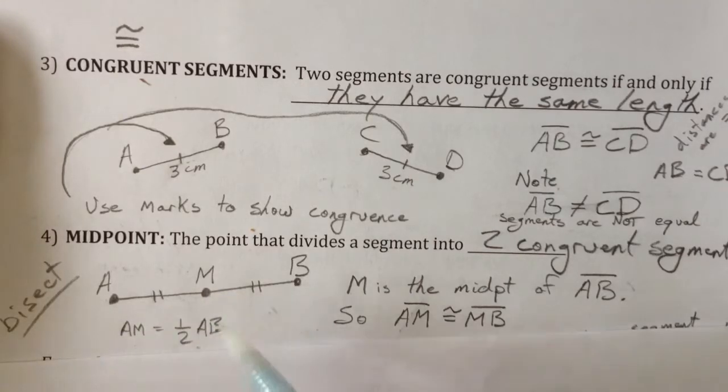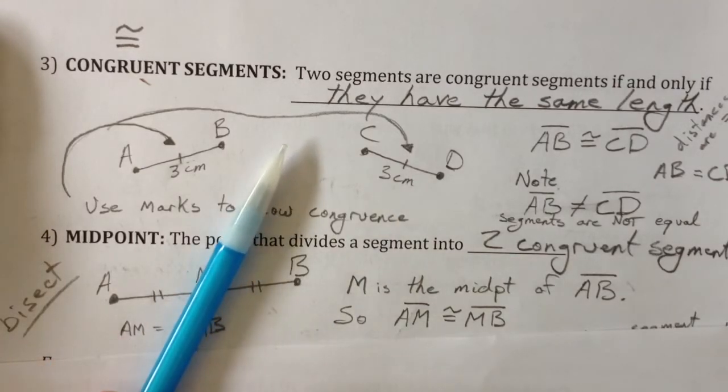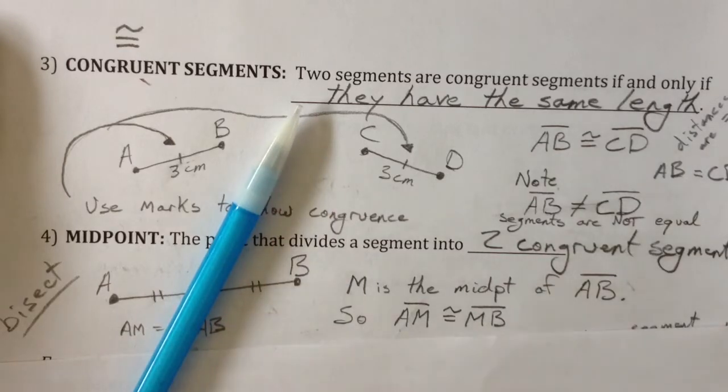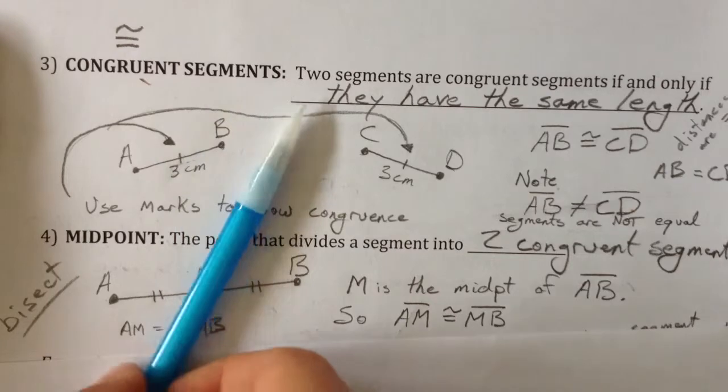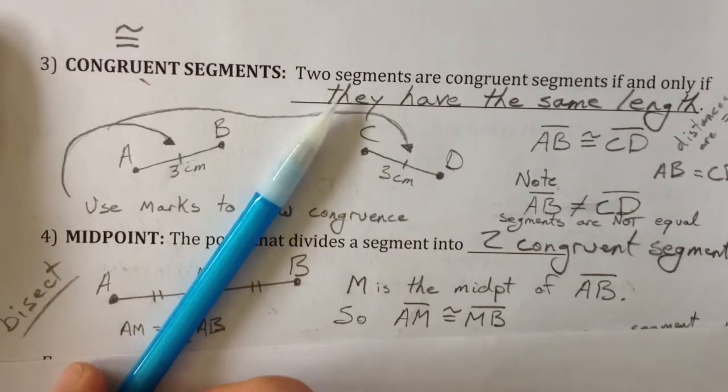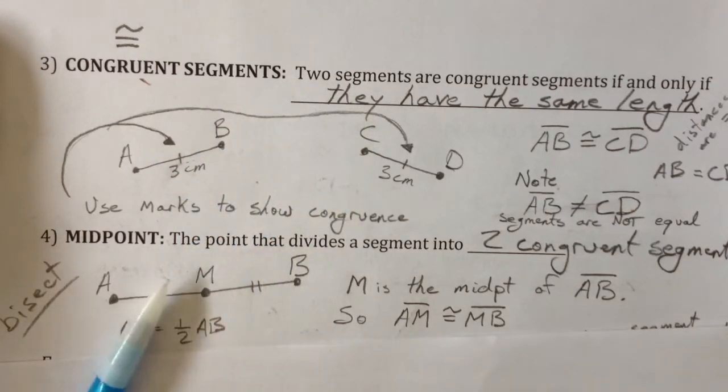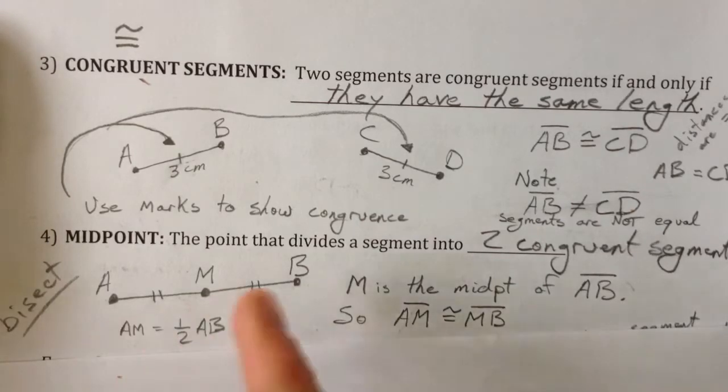Other things that could bisect are a line. So my pencil is representing a line. It is bisecting AB. It doesn't have to go perpendicular. It could go on the diagonal. Or it could be a ray that starts from M and goes this way. That could bisect. A number of things can bisect, but it always means that it's cutting in half and that you have two congruent parts.